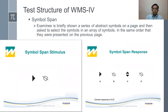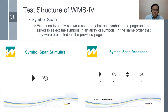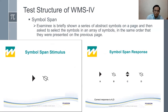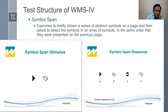Next is the symbol span: the examiner briefly shows a series of abstract symbols on a page and then asks the examinee to select the symbols from an array in the same order they were presented on the previous page. The first page shows only the symbols; then choices are shown and the examinee determines which symbols were presented. For example, seeing a triangle and a popsicle-shaped symbol, the correct response is A and B. That is the symbol span.